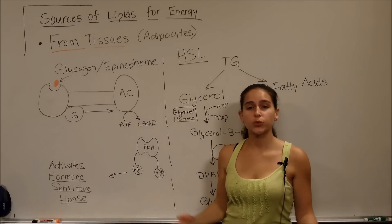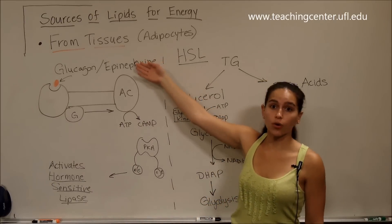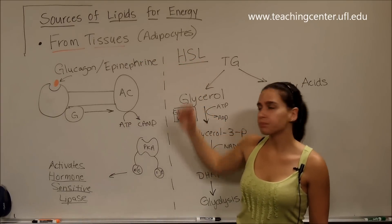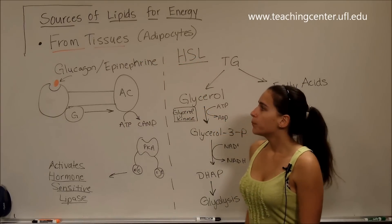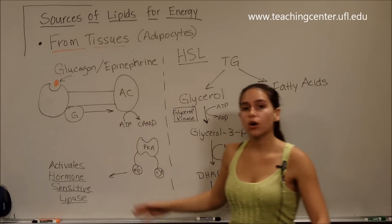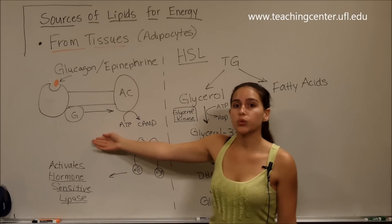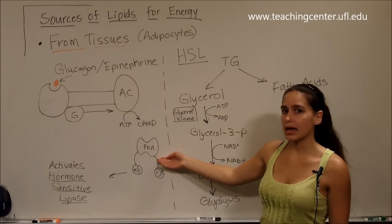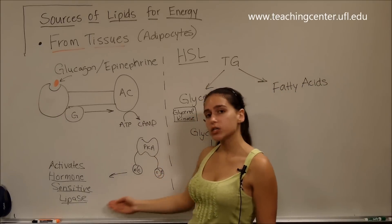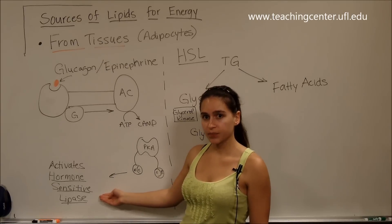Another source from which we can get lipids is from our tissues, specifically the adipose tissue or the adipocytes. Glucagon and epinephrine are going to signal the G-protein coupled receptor cascade, which would yield an active PKA. And an active PKA is going to phosphorylate hormone-sensitive lipase.